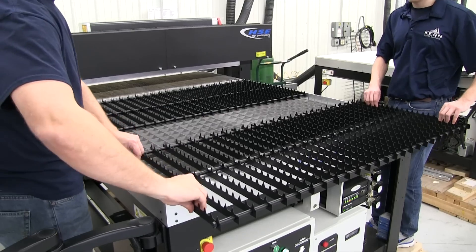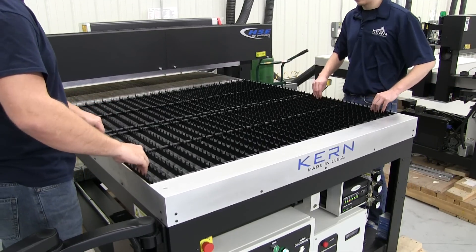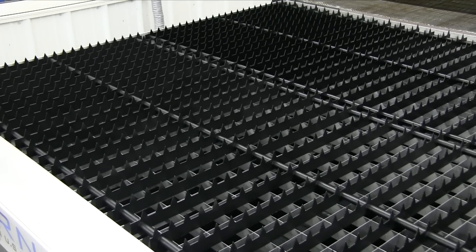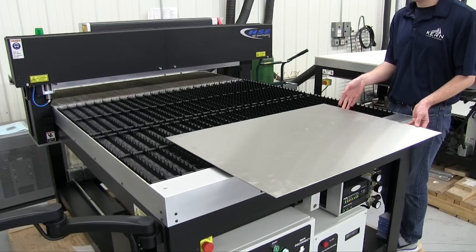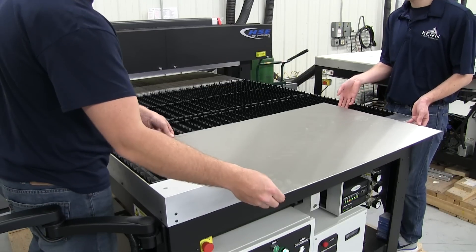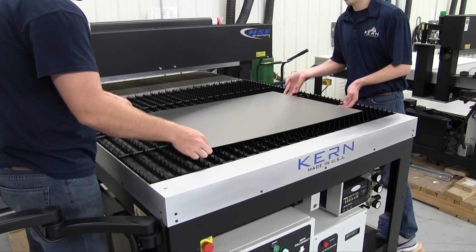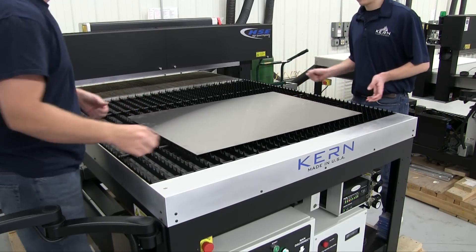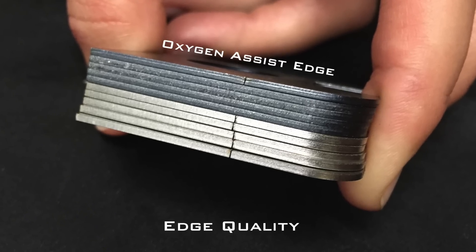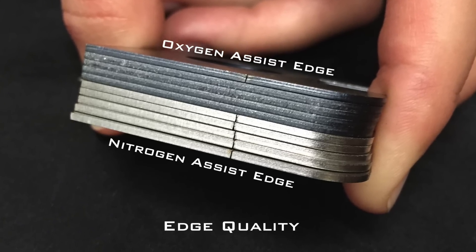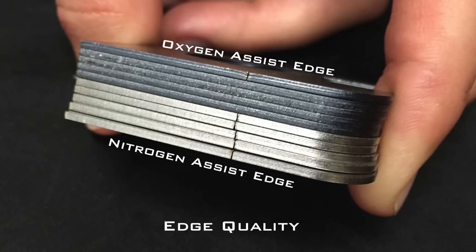The metal cutting table is constructed of a durable steel gridwork, which minimizes surface contact with the bottom side of the metal being cut. A 4x8 or 5x10 sheet of metal will fit comfortably onto Kearns' largest cutting table.